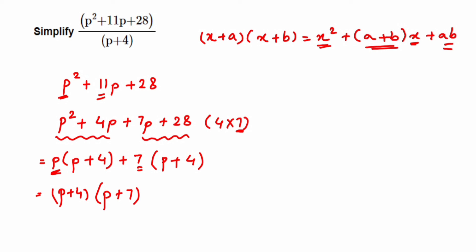This method is called splitting the middle term. When you cannot use an identity, use this approach: look at the constant and the middle term coefficient — find two numbers whose product equals the constant and whose sum or difference equals the middle coefficient.